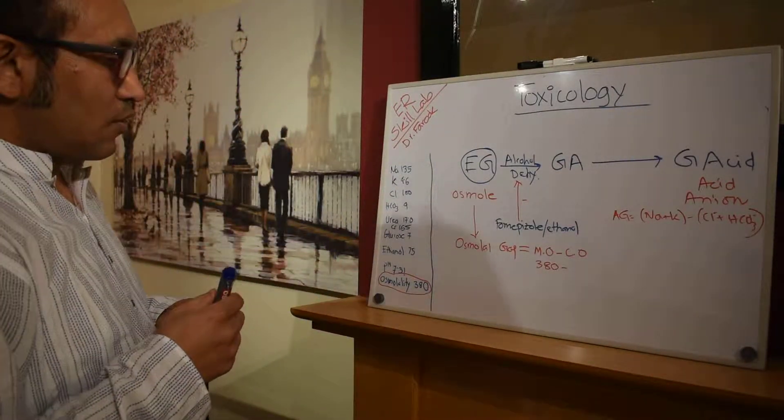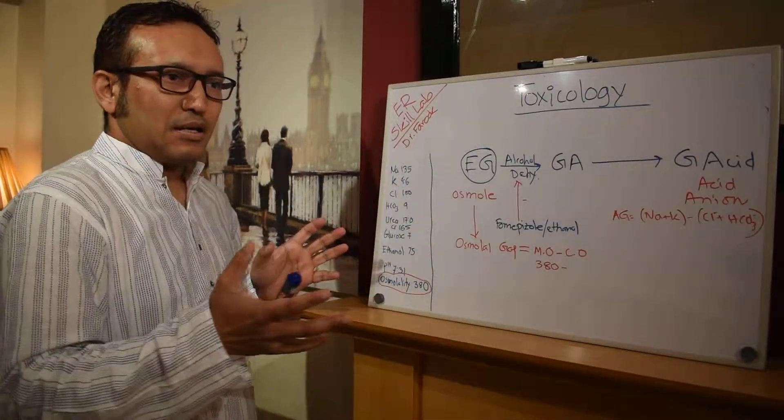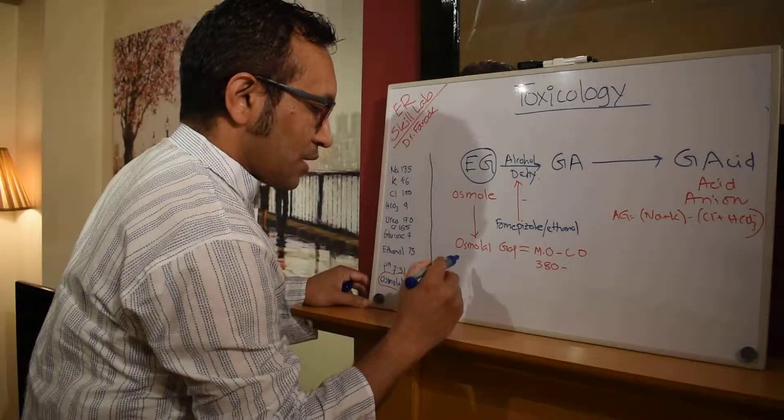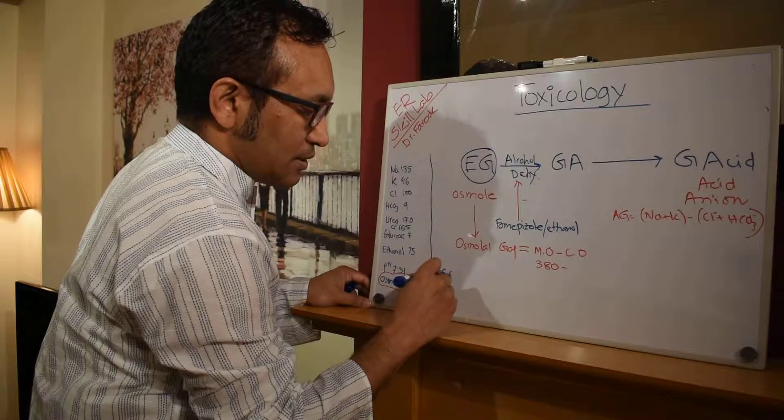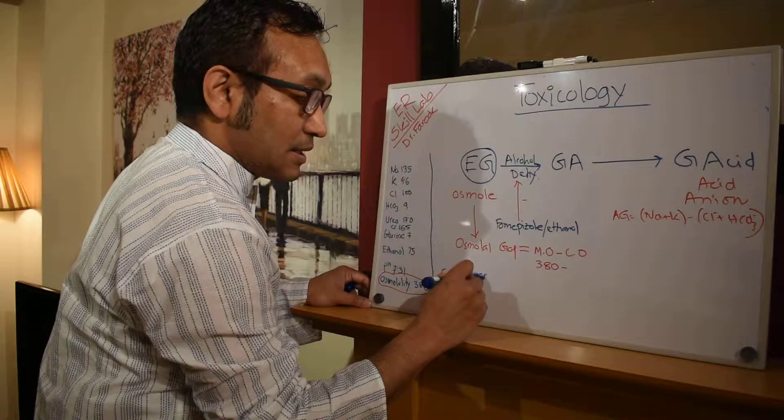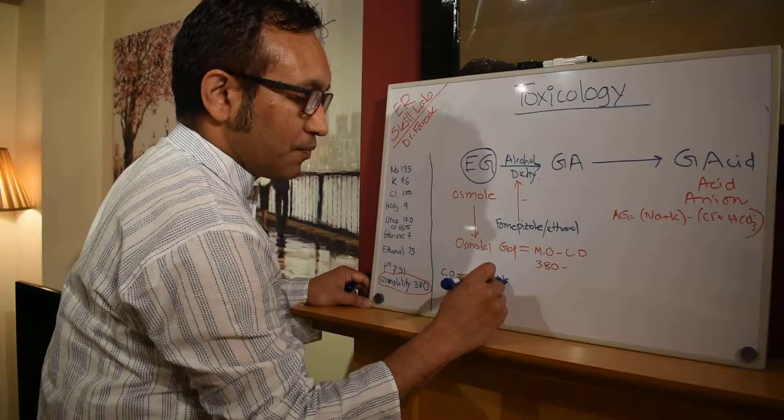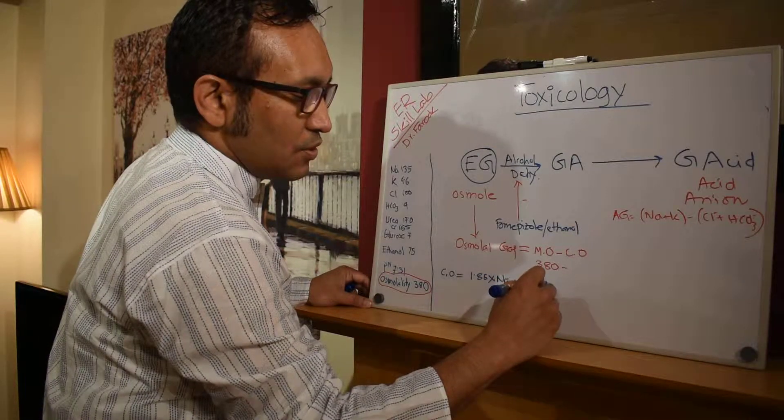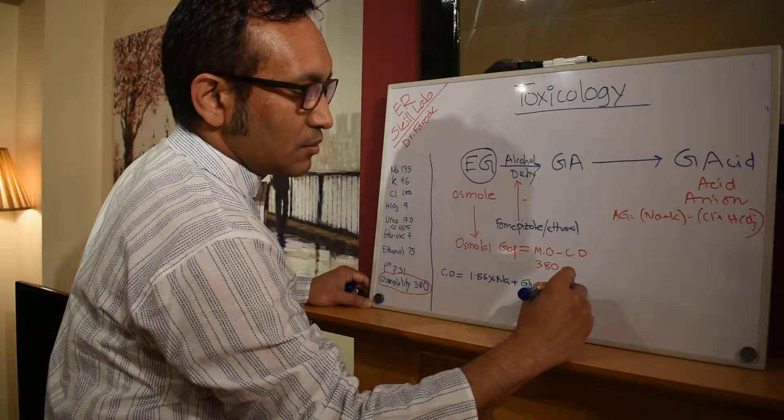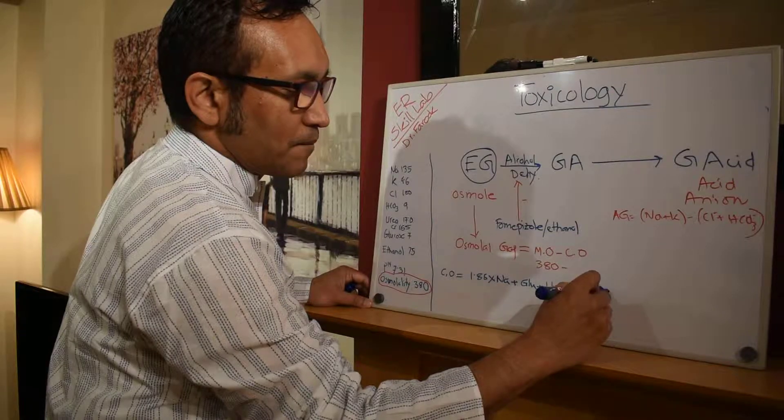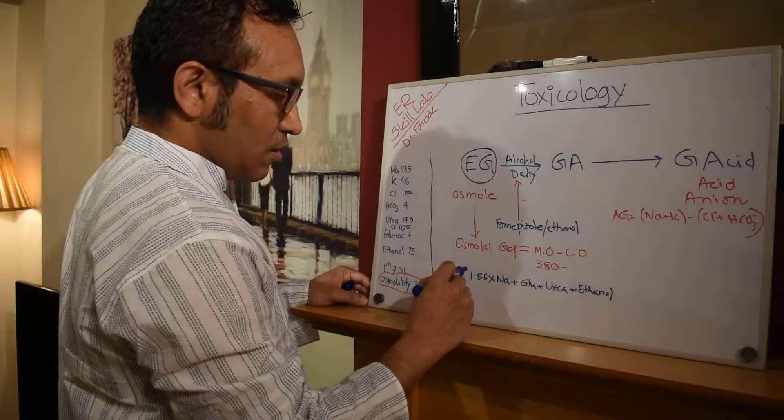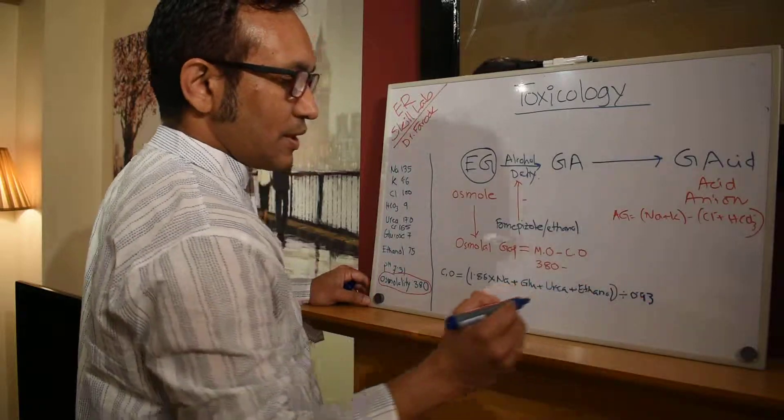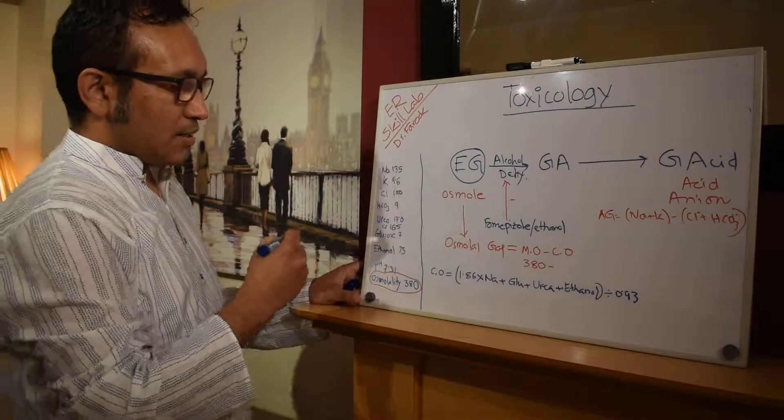Let's give you the formula for osmolality gap. There are different formulas, the formula that was given from the Royal College of Emergency Medicine is something like this. So calculated osmolality equals 1.86 times sodium plus glucose plus urea plus ethanol, and all these together divided by 0.93.